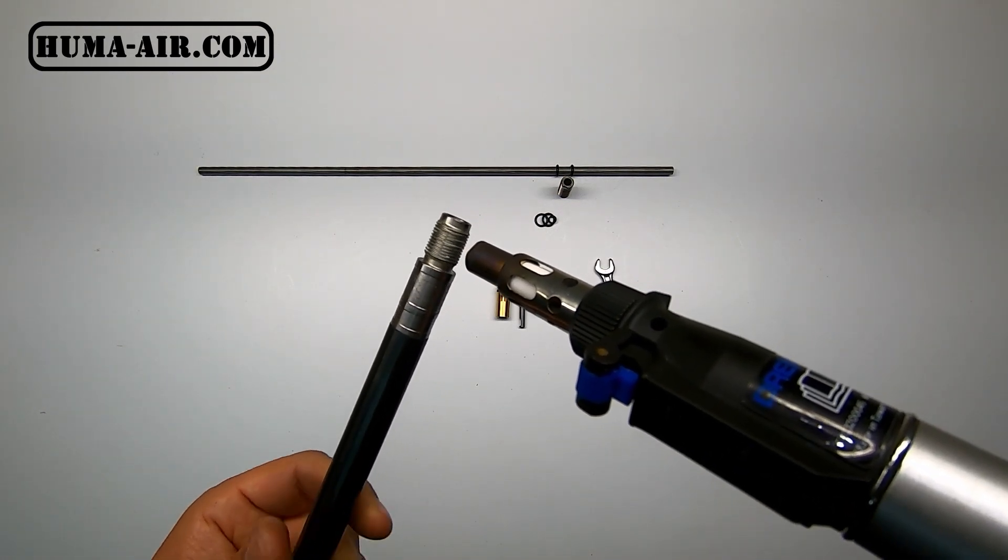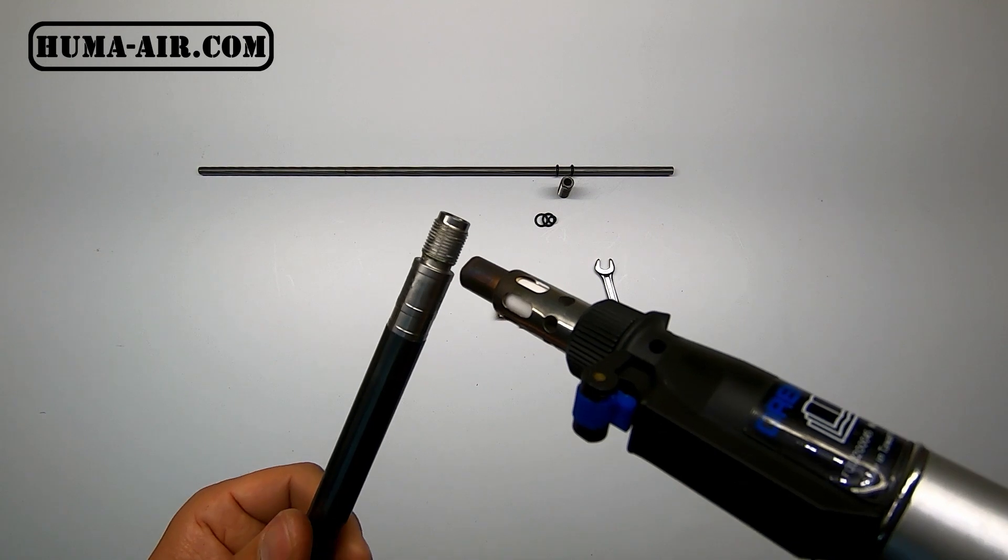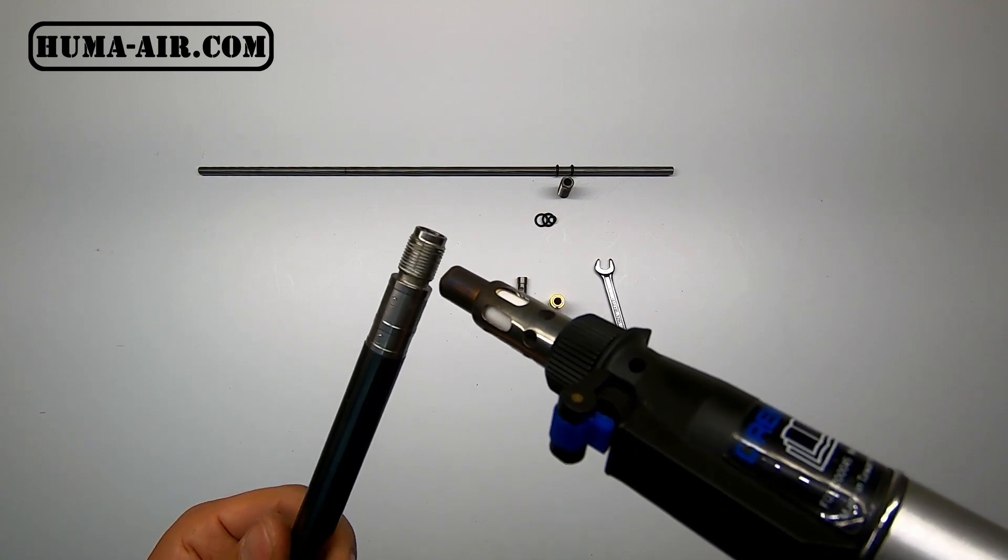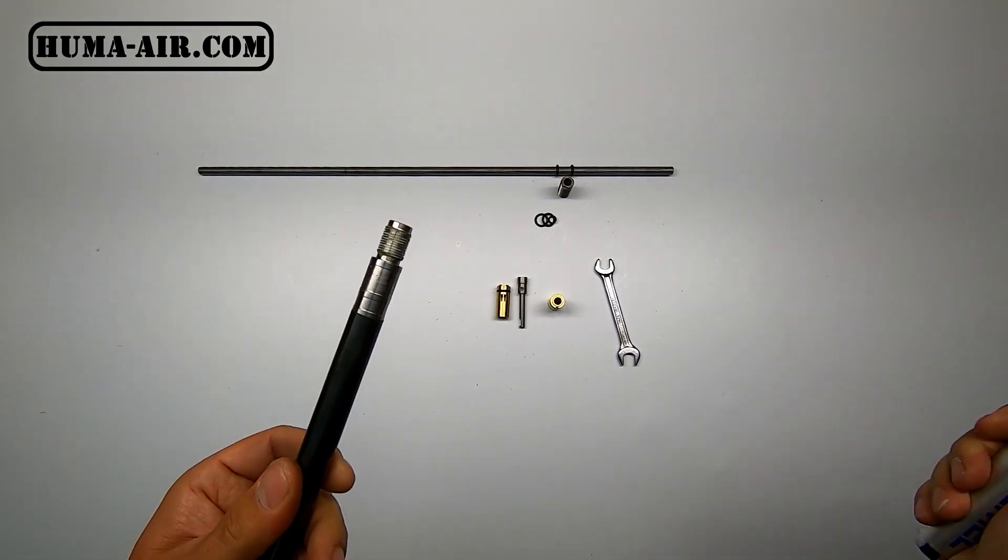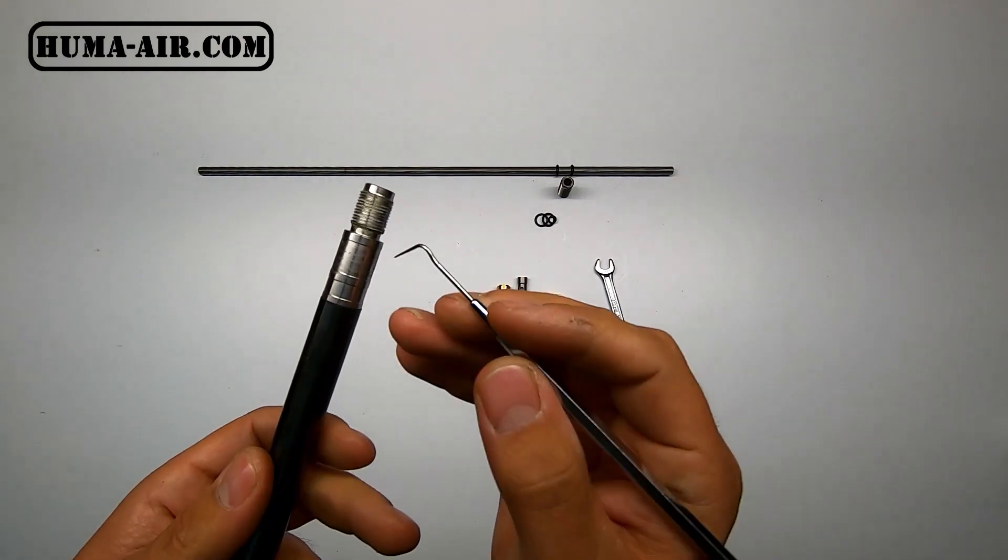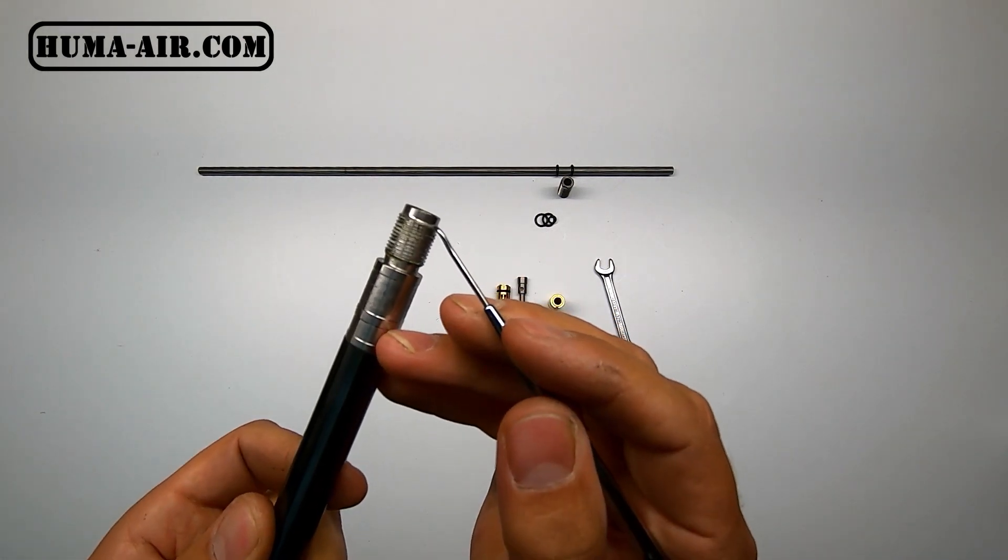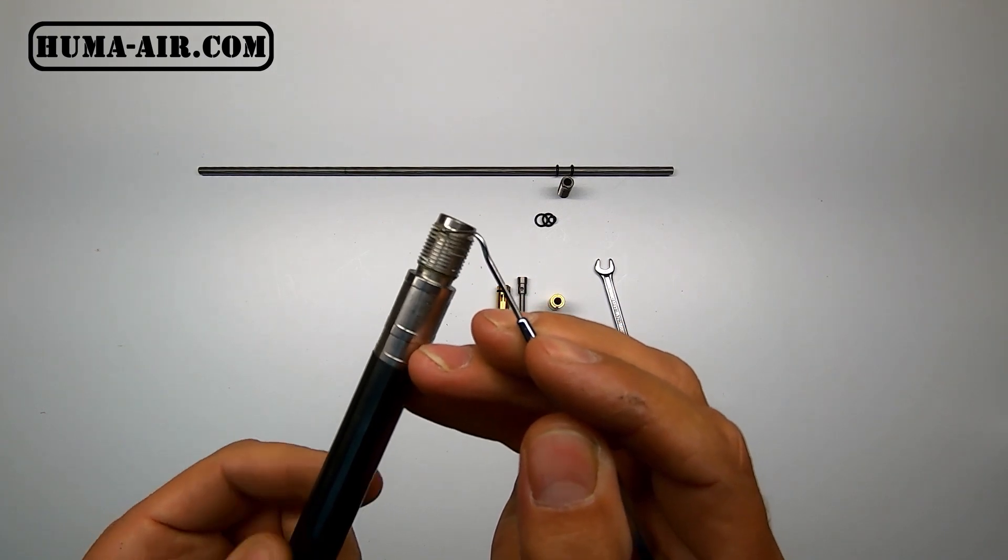To remove the remaining glue, I slightly heat it up so the glue gets soft, and then I take a fine pick and clean the threads. Like this.